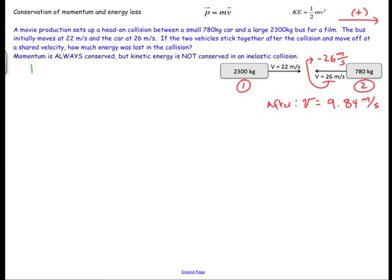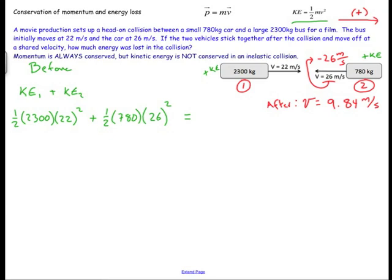Now what we're going to do is calculate the kinetic energy before. So the kinetic energy is one half mv squared. It is not a vector. So all of my values are going to be positive numbers. This has a positive KE even though it's traveling to the left and this has a positive KE even though it's traveling to the right. It's going to be the KE of one plus the KE of two. It's going to be one half. The mass is going to be 2300 kilograms times 22 meters per second squared. Remember this is the before the collision situation, plus one half the smaller mass times its velocity squared. So before I have this pretty huge number, 820,240 joules of kinetic energy.